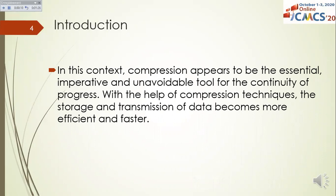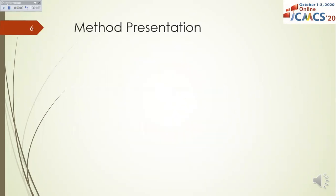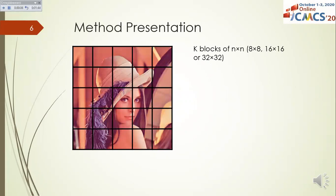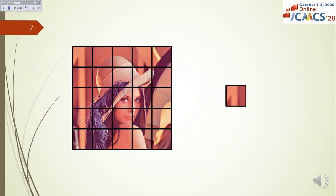With the help of compression techniques, the storage and transmission of data becomes more efficient and faster. This figure represents the compression-decompression scheme. After the color space transformation and in order to perform the DCT, the image is divided into blocks and the DCT transform is applied to all blocks of the image.